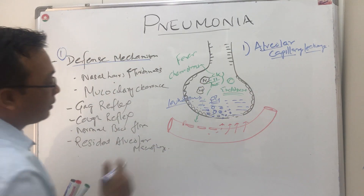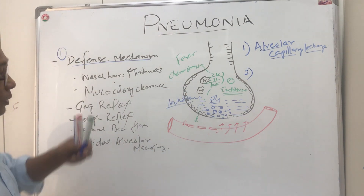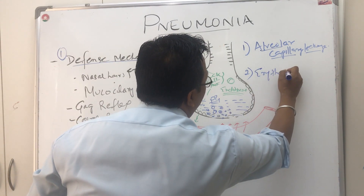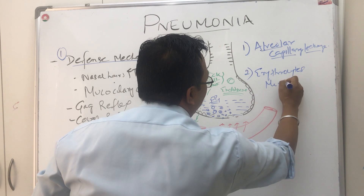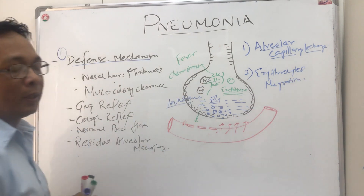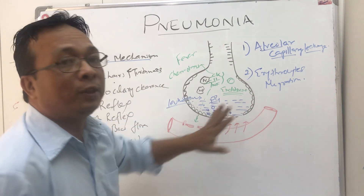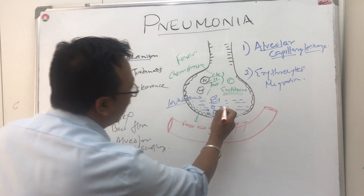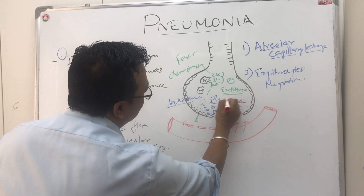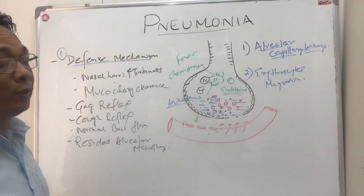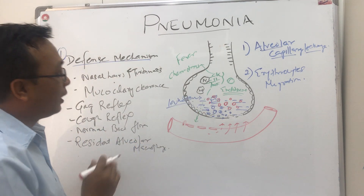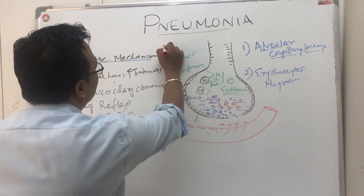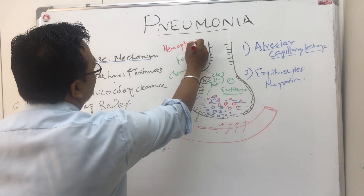After alveolar capillary leakage, the next factor you have to mention in the exam is erythrocyte migration, which is specially mentioned in Harrison's Internal Medicine. Along with the fluid, there are plenty of erythrocytes coming into the alveoli. These erythrocytes here in the alveoli, along with the fluid, explain hemoptysis in pneumonia.